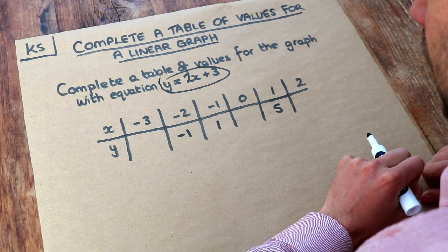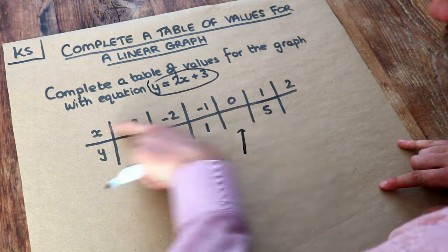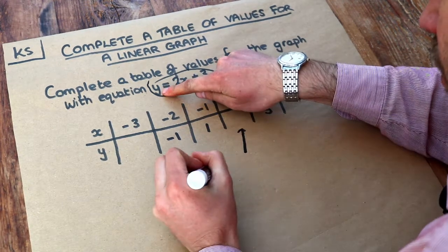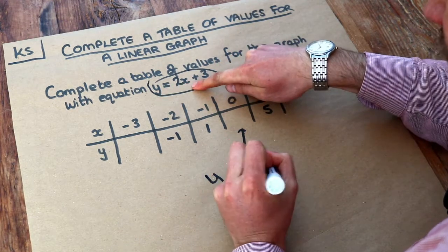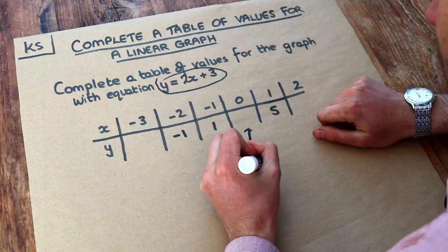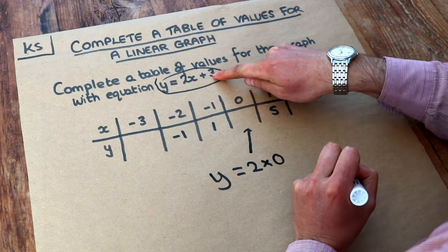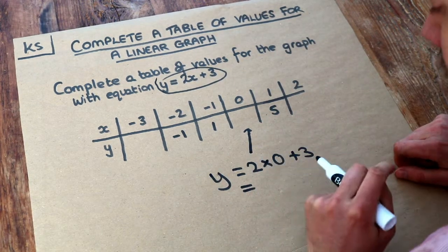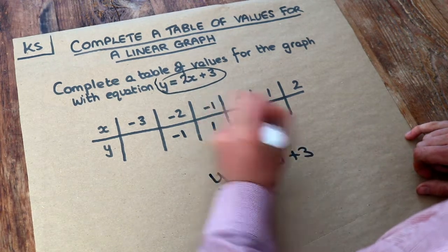Let's take one of the simpler ones. If x is 0, we want to work out y. Using this rule, the y value equals 2 times the x value. 2x just means 2 times x. So 2 times 0 in this case, plus 3. What's 2 times 0? That's just 0, plus 3 is 3. So the y value is 3.